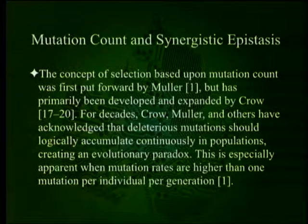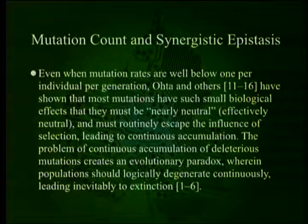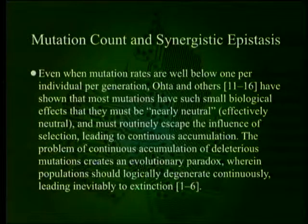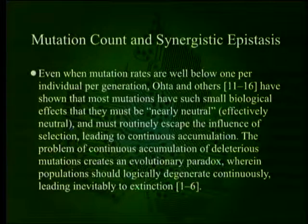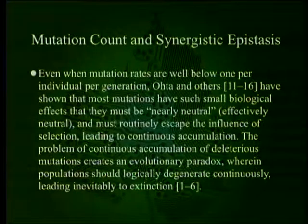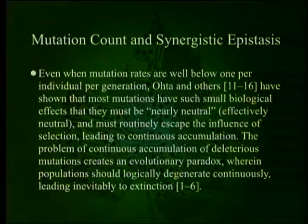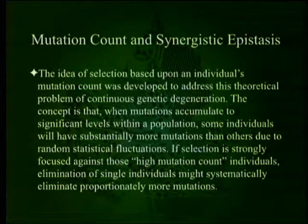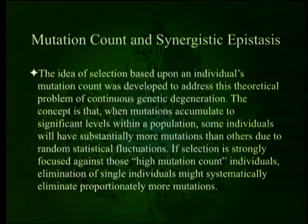This is especially apparent when mutation rates are higher than one mutation per individual per generation. Even when mutation rates are well below one per generation, Oda and others have shown that most mutations have such small biological effects that they must be nearly neutral, effectively neutral, and must routinely escape the influence of selection, leading to continuous accumulation. The problem of continuous accumulation creates an evolutionary paradox wherein populations should logically degenerate continuously, leading inevitably to extinction.